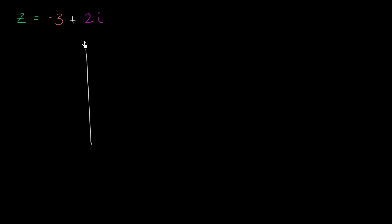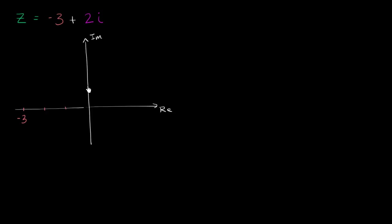So this is our imaginary axis and that is our real axis. The real part is negative three, so we go one, two, three to the left of the origin — so negative three — and then we have two i, so we go up two in the imaginary direction, one, two, just like that. So z is real part negative three, imaginary part two, right over here in the complex plane.